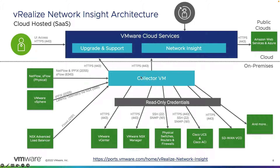The collector is still going to be deployed in most cases within your data center, and this could be multiple collectors depending on size and scale. When it comes to Amazon Web Services, Azure, and so on, the platform has the capability of connecting directly to those from the cloud — so you're not pulling from a specific collector VM deployed within your on-premises environment. The users still utilize their browser to access the platform, and the look and feel between the on-premises and SaaS offerings is very, very identical.